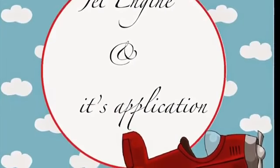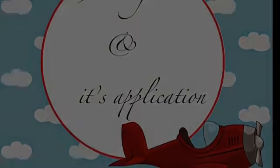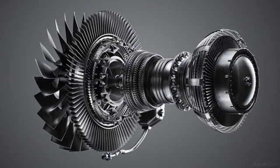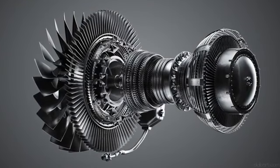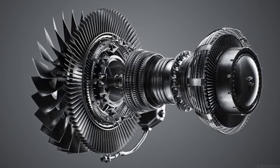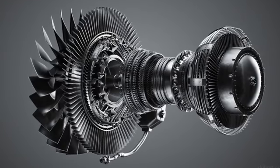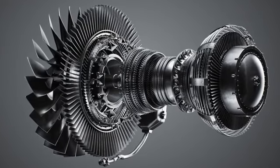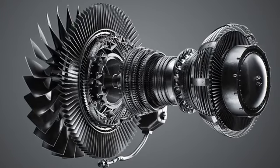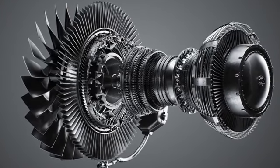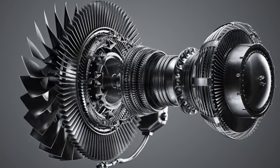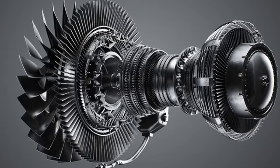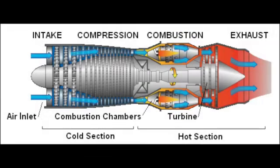A jet engine is a reaction engine that discharges a fast-moving jet which generates thrust by jet propulsion in accordance with Newton's laws of motion. This broad definition of jet engines includes turbojets, turbofans, rockets, ramjets and pulsejets. In general, most jet engines are internal combustion engines, but non-combusting forms also exist.